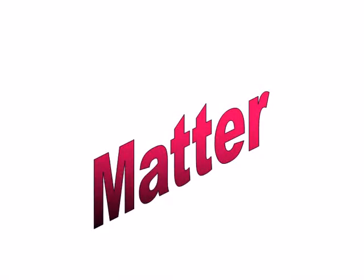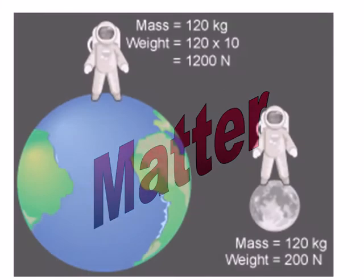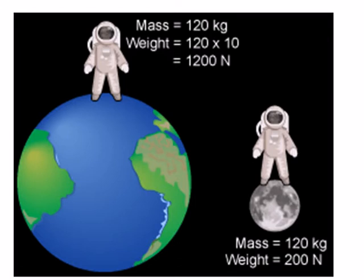Matter is anything that occupies space and has mass. Mass is the amount of matter in an object. For practical purposes, mass is measured as weight. Technically, mass is constant and weight is variable. Weight results from gravity acting on mass. Therefore, even though someone's mass remains constant, if they were on the moon, where the force of gravity is only one-sixth of that on Earth, they would weigh less.